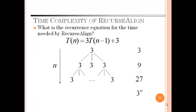Now time complexity of recursive alignment. Here it is T, a function of 3T, and it will increase in the order of 3, 9, 27, up to 3 raised to the power n.